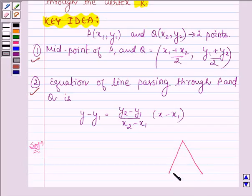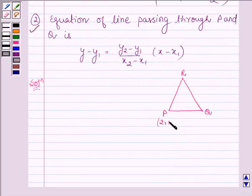Suppose this is triangle PQR. Point P is given by (2,1), Q is (-2,3), and R is (4,5).